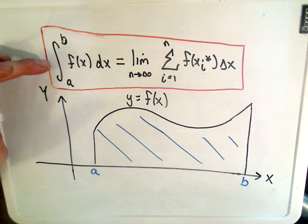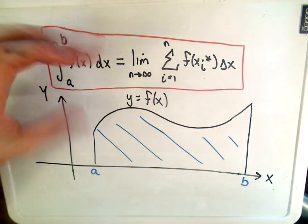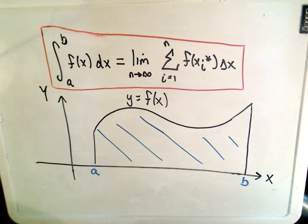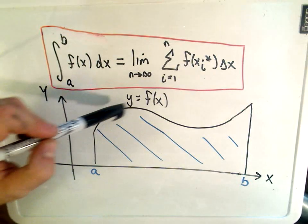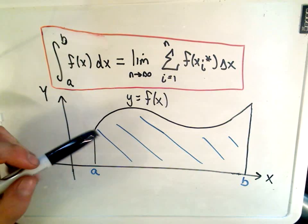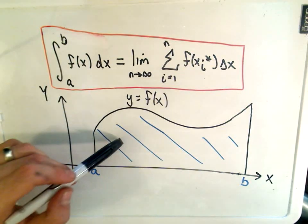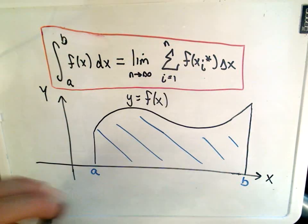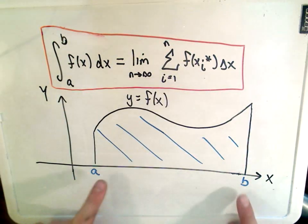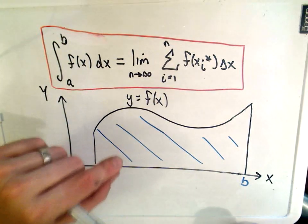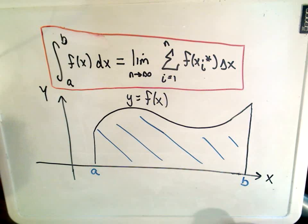You may have seen that this integral from a to b of f of x represents finding the area. If the function is above the x-axis, you can think about it as being an area — specifically, we're calculating the area between the function f of x and the x-axis between the x-coordinates of a and b. Again, you can only really think of it as an area if the function is above the x-axis.